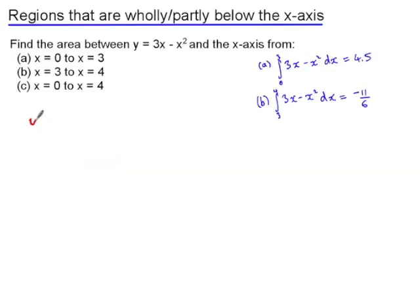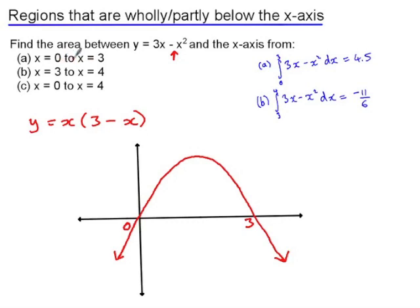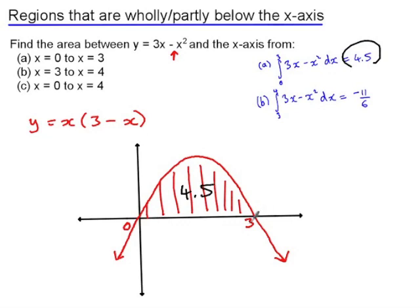It's helpful to draw a sketch of the function. The function is a quadratic, and if we factorise we can see it has roots when x is 0 and when x is 3. Because of the negative coefficient of x squared, it is a parabola with a maximum turning point. The section from 3 to 4 is below the x-axis, so when we integrated we got negative 11 over 6, and the actual area is the absolute value, which is 11 over 6.